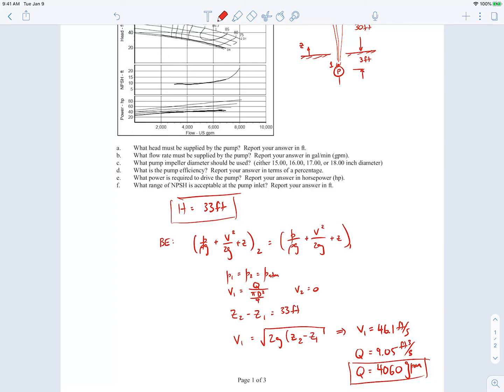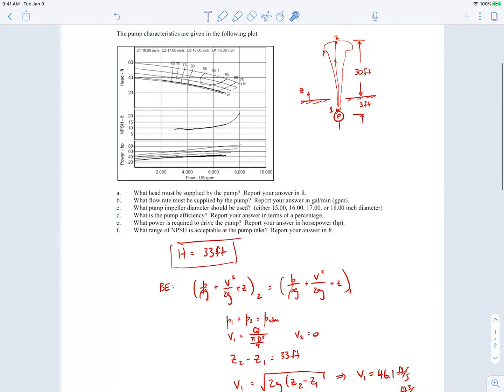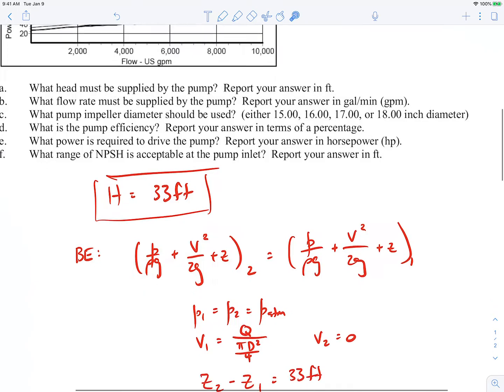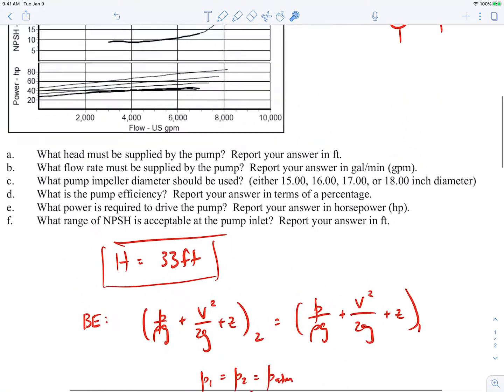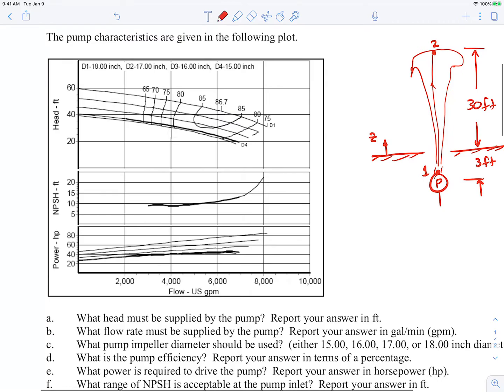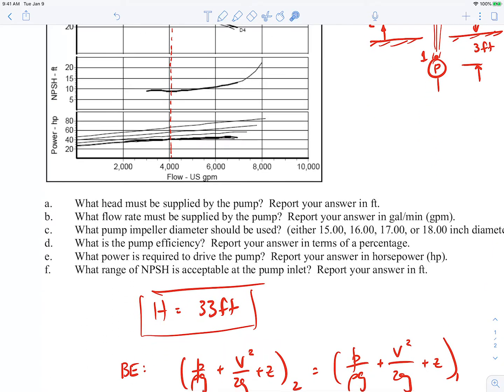We've done now parts A and part B. Now we're asked to find what pump impeller diameter should be used. So we can go back up here. First of all, just remember that our volumetric flow rate is just over 4,000 gallons per minute. So when I look on this plot, I'm going to be somewhere over here, just kind of running up the line this way.